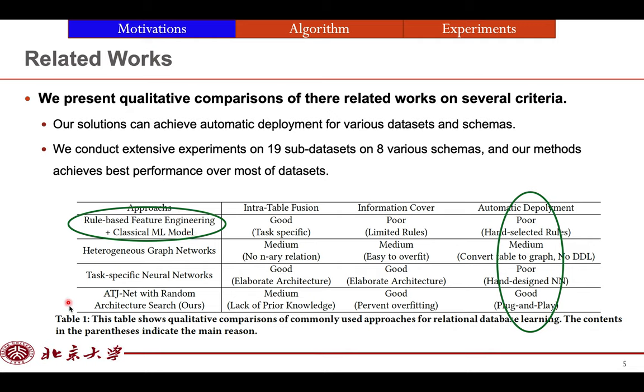This is one of the related works as rule-based feature engineering plus classical machine learning model. And we also present other related works in our paper. However, as we know that none of them can do automatic deployment for various datasets. But our solution not only can achieve automatic deployment for various datasets and schema, but also achieve best performance over most of datasets.